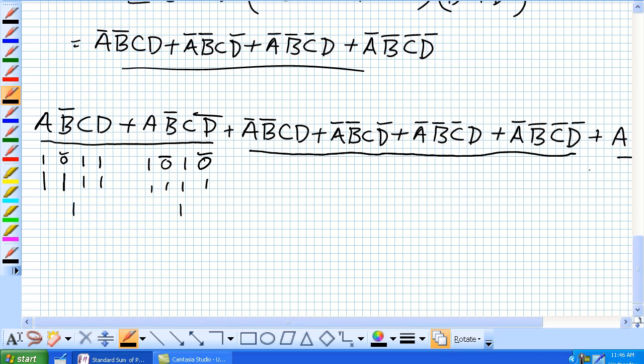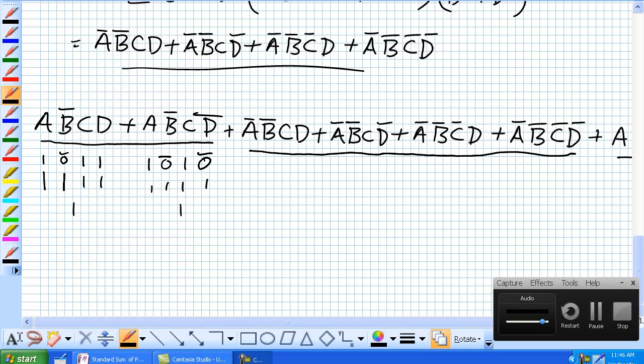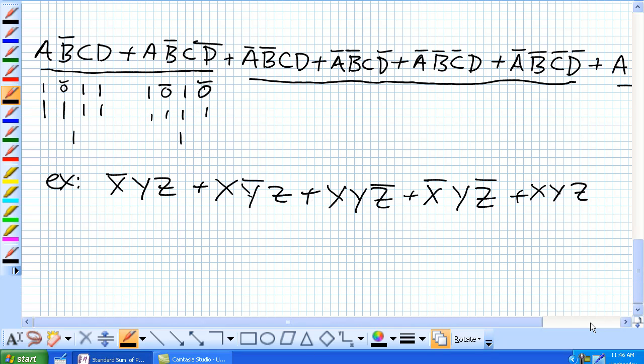So here's an example that I'm going to show you in the standard sum of products form, and you're going to give me which binary combinations will give you a 1. There you go. So not x, y, z, or x, not y, z, or x, y, not z, or x, y, not z, or x, y, z.